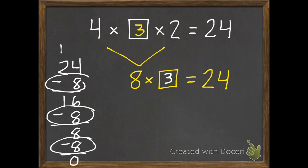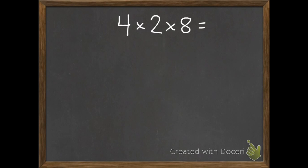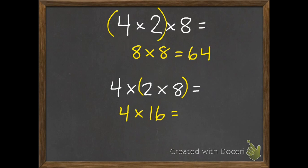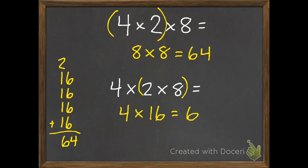Okay, time for you to do some practice problems. 4 times 2 times 8 equals — group those numbers one way and find the answer. Pause it, and unpause when you're ready and we'll check it. I would group the first two: 4 times 2 is 8, times 8, and I know 8 times 8 is 64. You may also have done it the other way: 2 times 8 is 16, times 4, and adding four 16s also gives you 64.